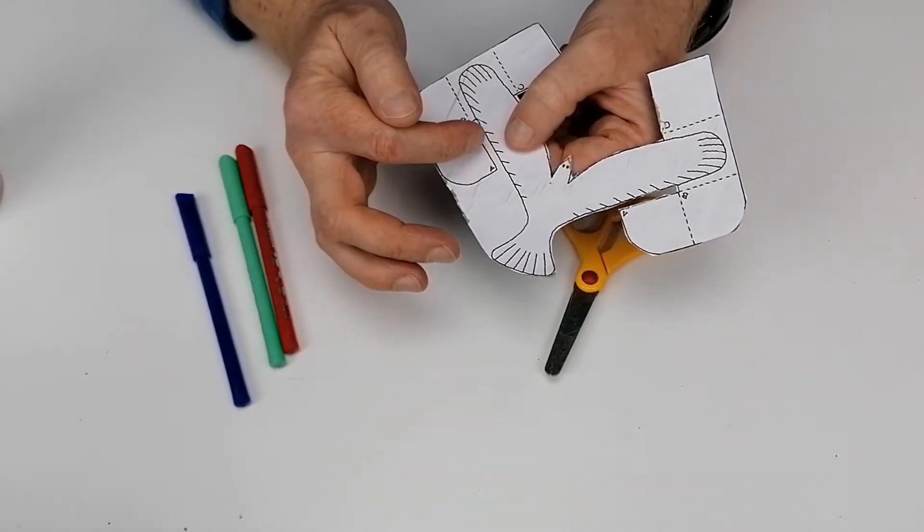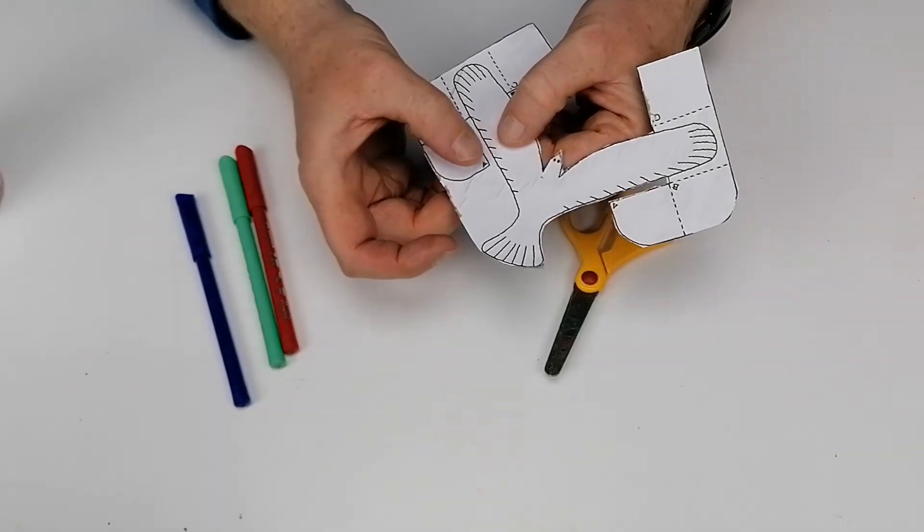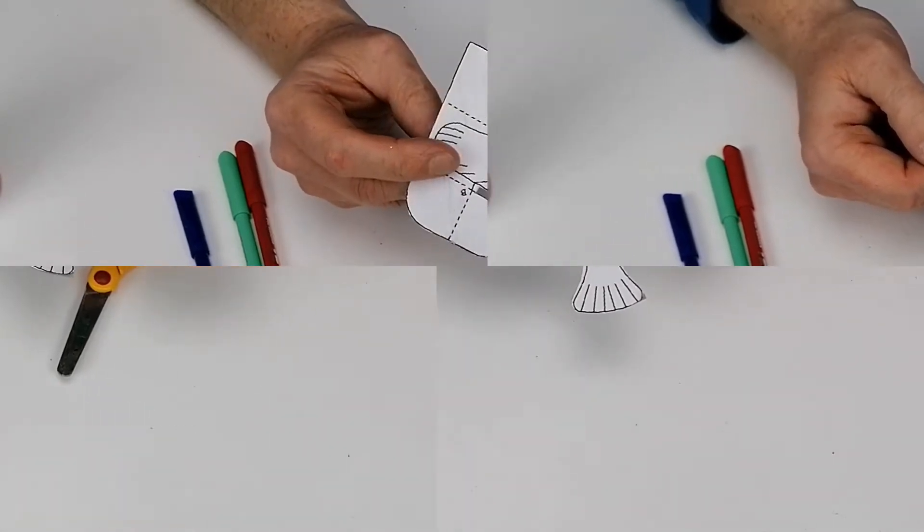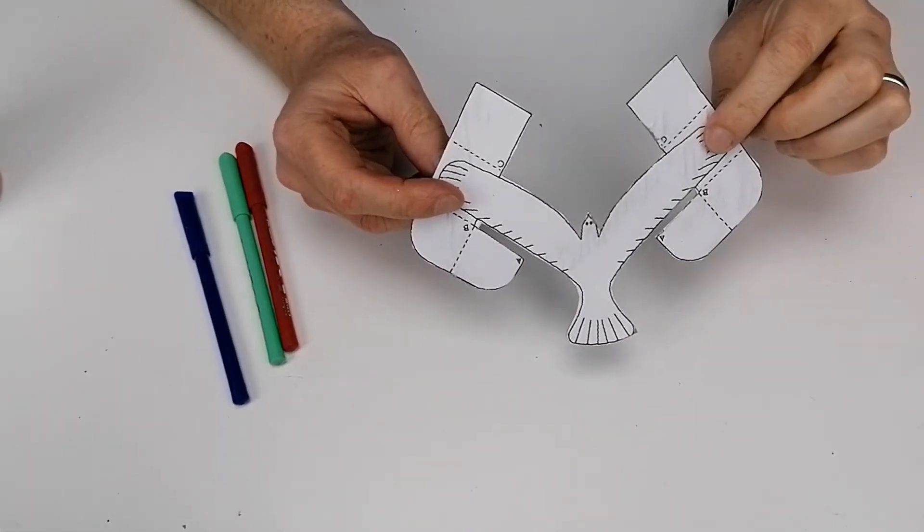There's a little channel between A, where it says A there, and the bird itself. That little challenge can be a bit tricky to cut out, so you might need to help them. Now we have the shape cut out.